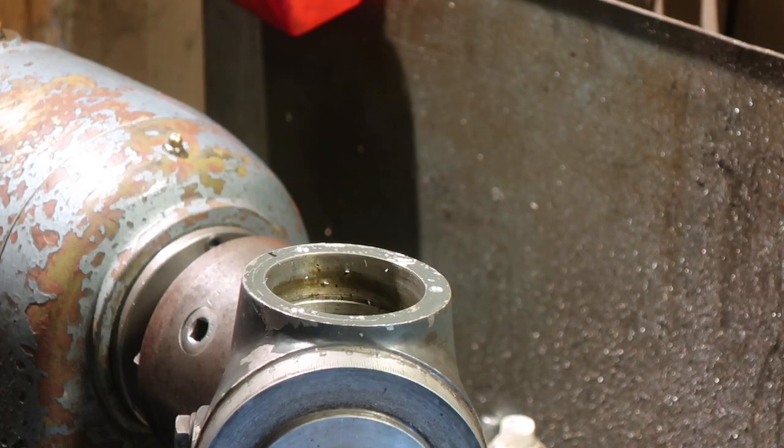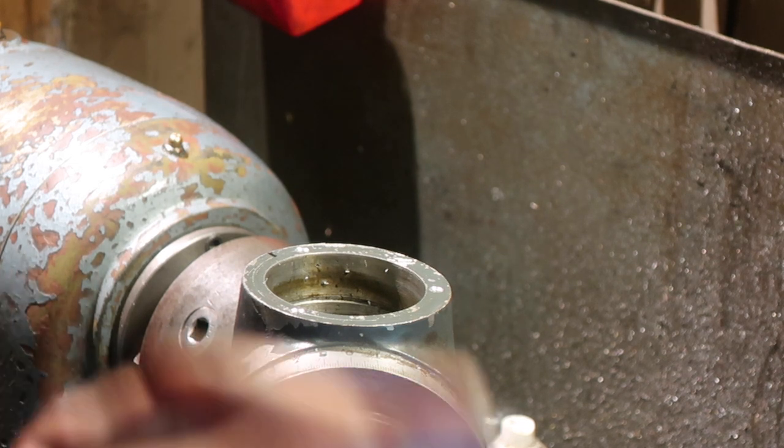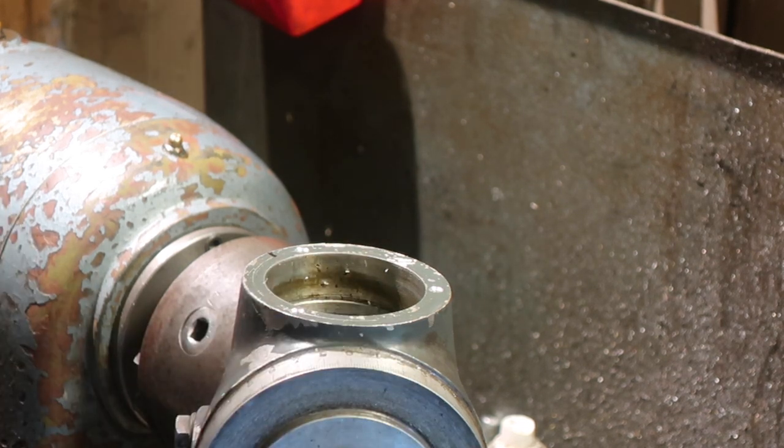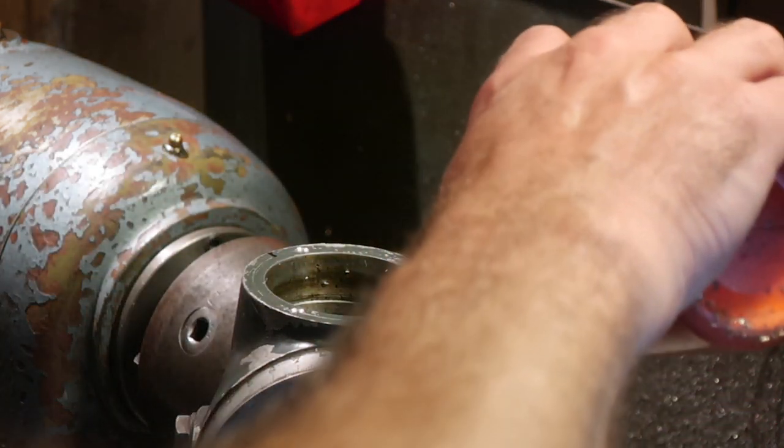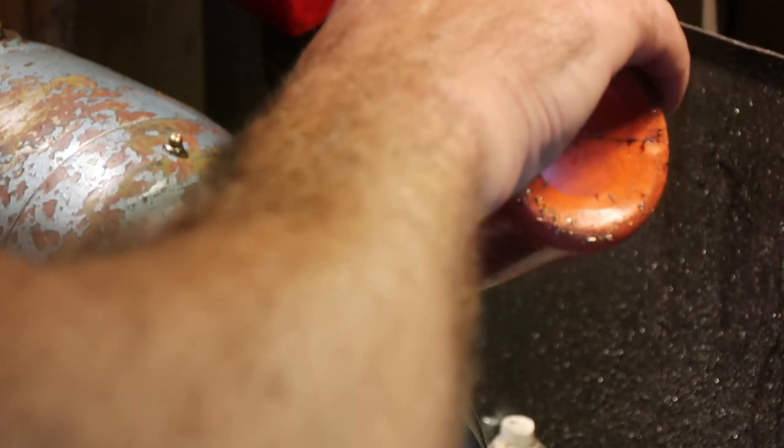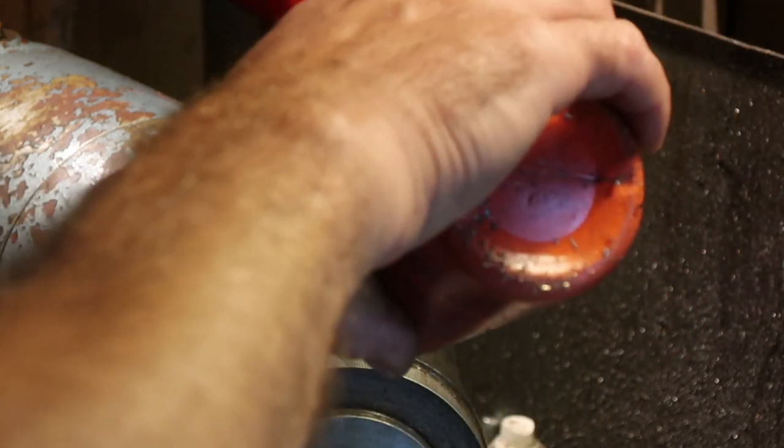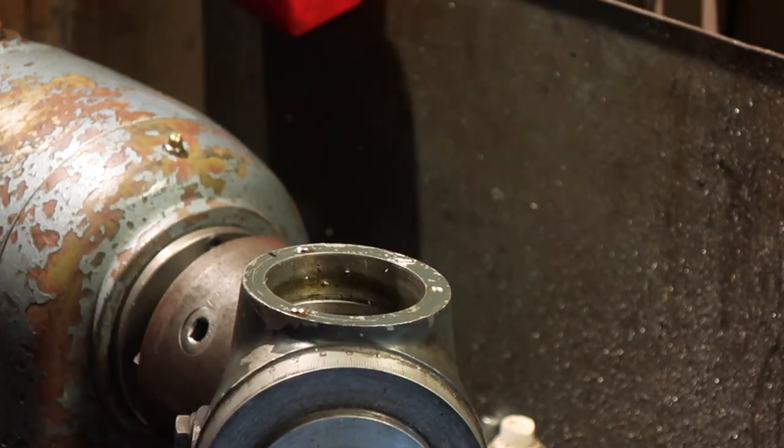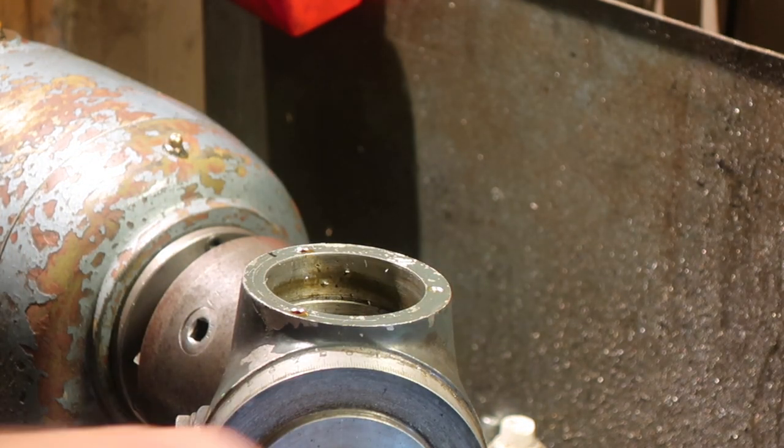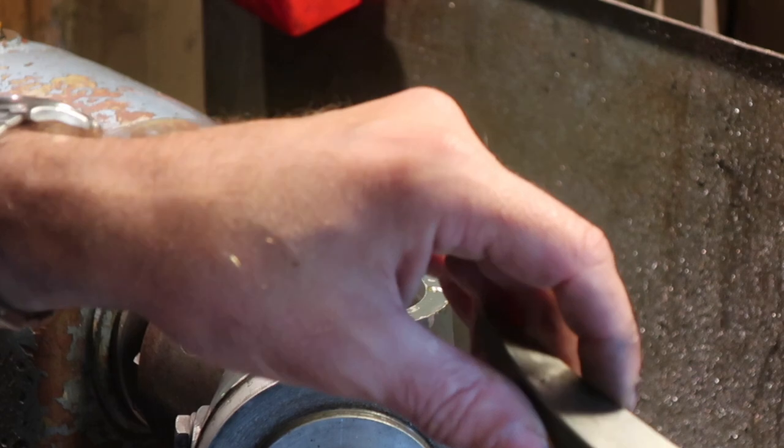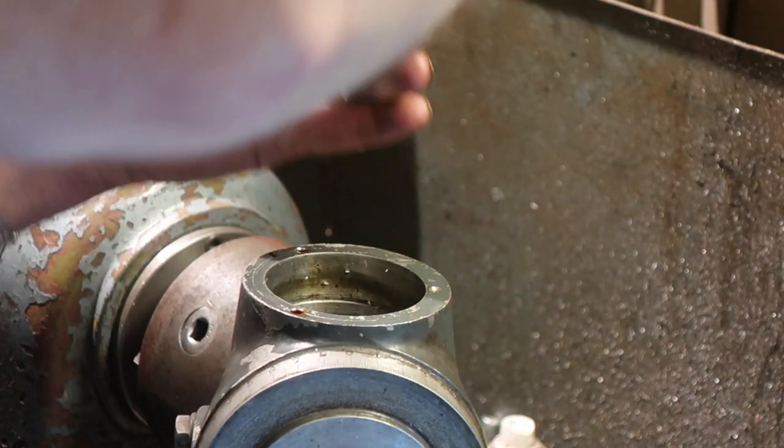So we've got three holes tap M4. I can't find my tapping guide and frankly fuck tapping anything freehand. So I've made a tapping guide. It's a piece of old brake disc, drilled out to four, then reamed H8.